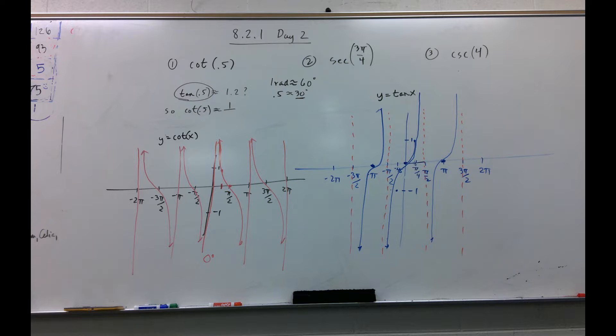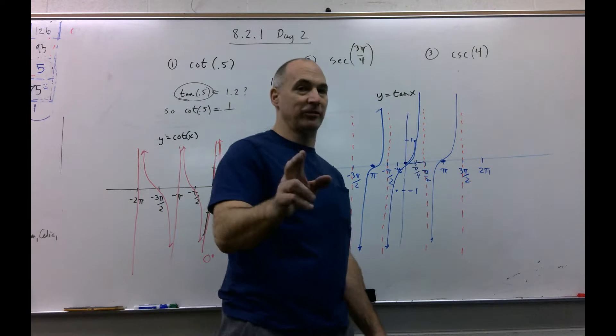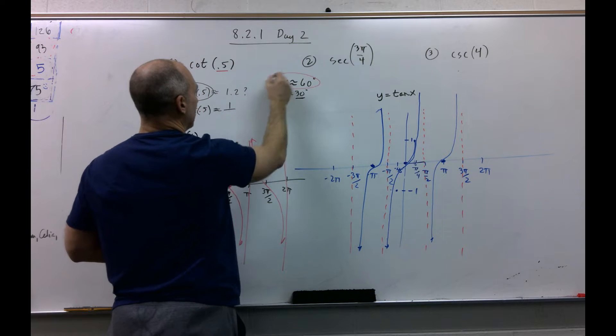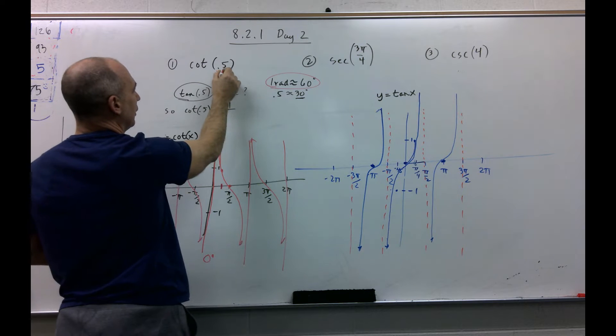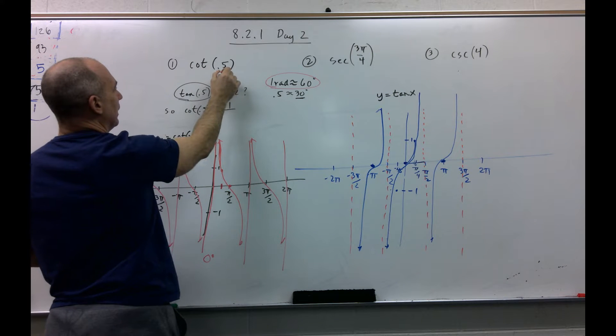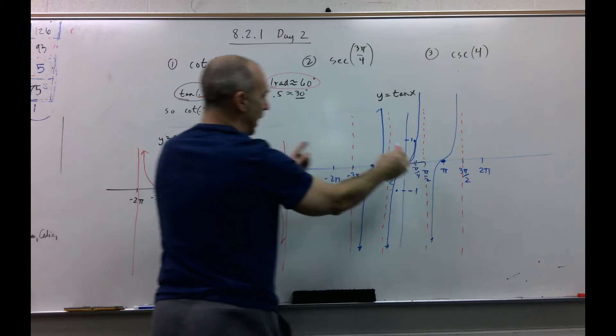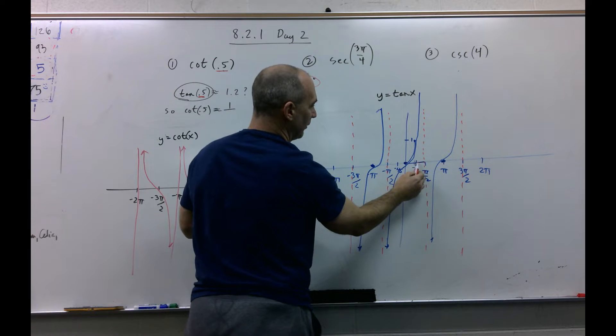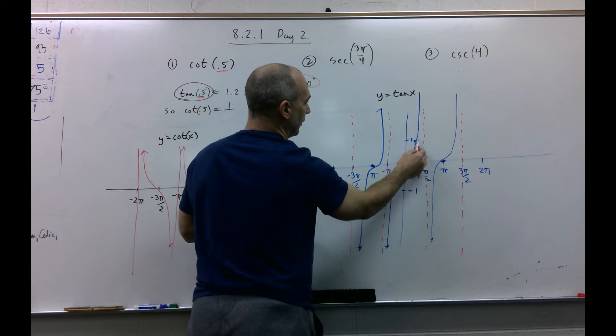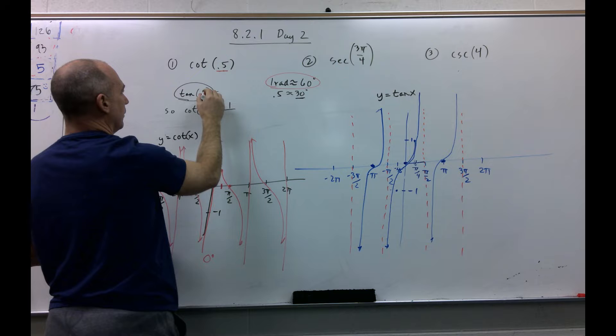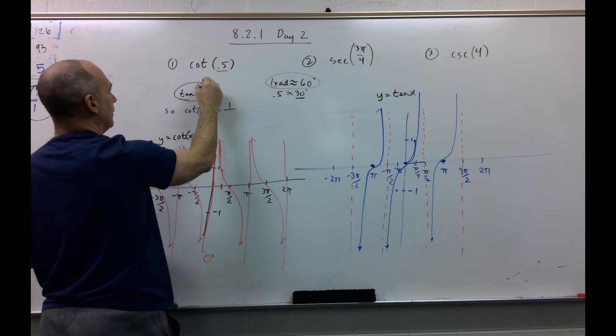All right, rather than redo the video, I'm just going to own my mistake because we can learn from mistakes. When I saw this, I went ahead and I looked at one radian. I replaced this with 60 degrees. So I said, let's find tangent of 60 degrees. That is wrong because it's not 60, it's approximately 30.